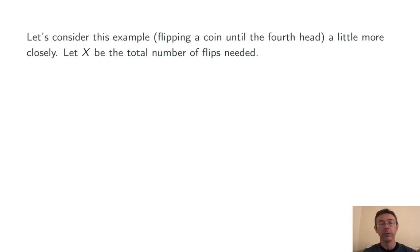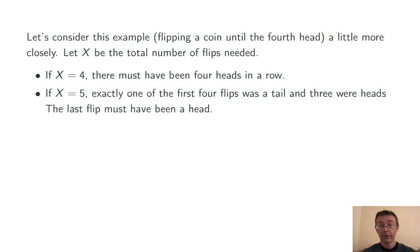Let's think about that example a little bit more. Let's let the random variable x represent the total number of flips needed, and consider how we might get different values of x. If x is 4, we must have just had four heads in a row. If x is 5, then one of the first four flips was a tail, and the other three were heads. The last flip here, and always, is a head.